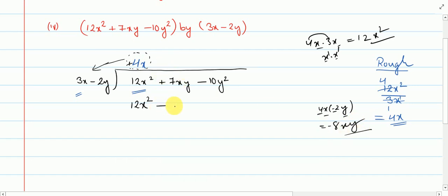Now you need to cancel the first term, so we have to subtract, we need to change the sign. Like here it was plus so I made it minus, here it was minus so I made it plus. Now plus 12x squared minus 12x squared cancel. Now 7xy plus 8xy, so same sign we need to add, so 7 plus 8 is 15 and simply xy.